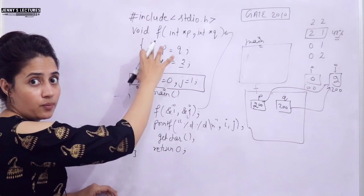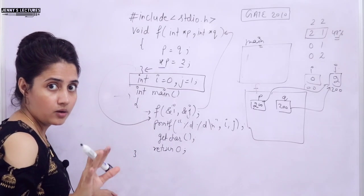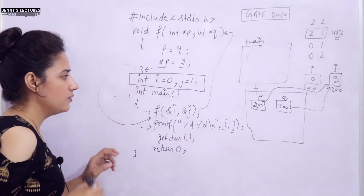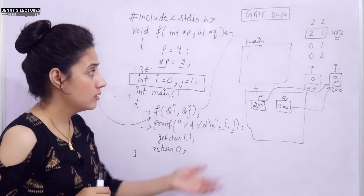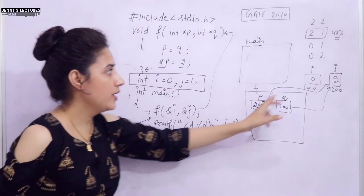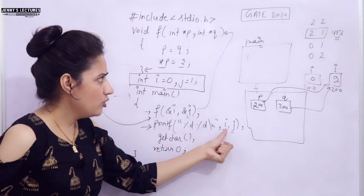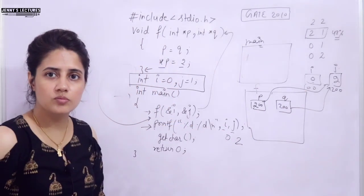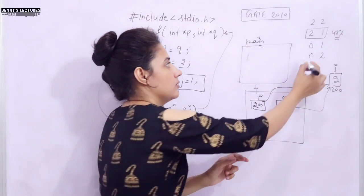Now control will go here. Exit from the function. And now we will go back to here where we are calling this function. Now after this, what we are doing? Printf, percentage d, i and j. We are printing value of i and j. Now what value would be printed? You tell me. i and j. These are globally declared. We can access these variables here. And using pointer, we have modified these values. We have modified only j value, not i value. So whatever the value of i, value of i is still 0. So it will print 0 and 2. That's it. So what would be the answer? This one. 0 and 2.